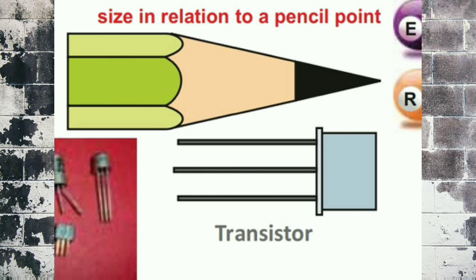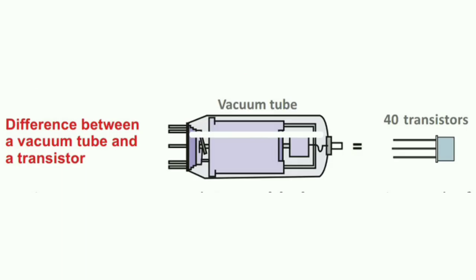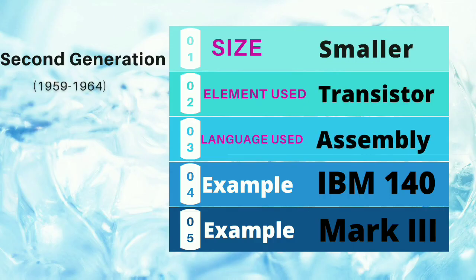The transistor size is just this much. Like the tip of your pencil that you sharpen — like that. Let me show you one more picture. See the difference between a vacuum tube and a transistor. One vacuum tube is equal to 40 transistors. Now you can imagine how small one transistor is compared to a vacuum tube. Where we used one vacuum tube, comparatively we could use 40 transistors.